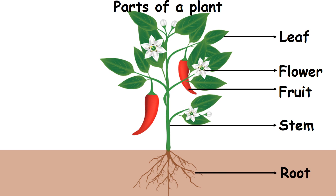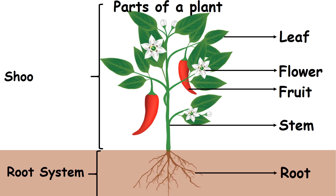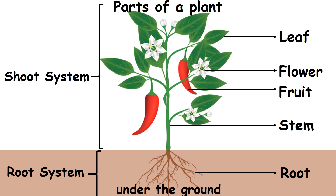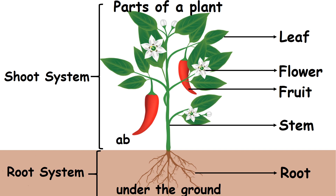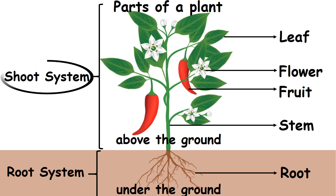Every plant has a root system and a shoot system. The part of the plant that grows under the ground is called the root system. The part of the plant that grows above the ground is called the shoot system.